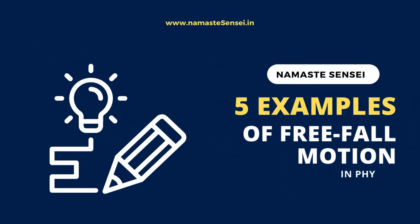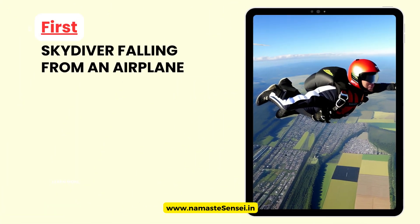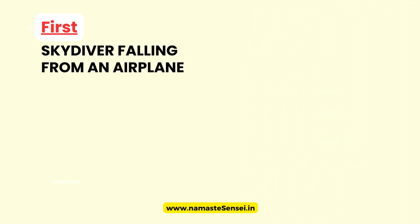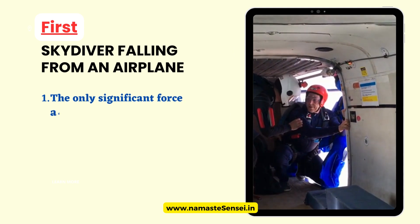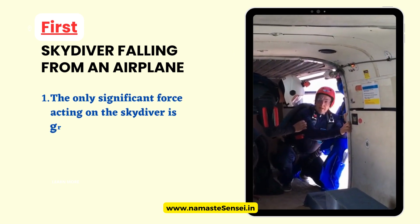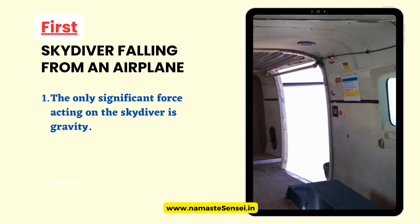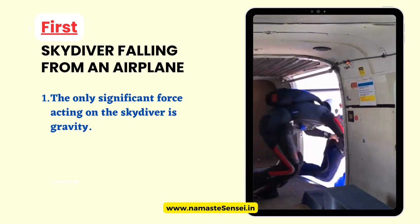5 Examples of Free Fall Motion in Physics. First, Skydiver Falling from an Airplane. When a skydiver jumps out of an airplane, they enter a state of free fall. In this state, the only significant force acting on the skydiver is gravity. Gravity pulls the skydiver downward, causing them to accelerate.